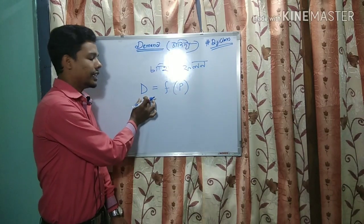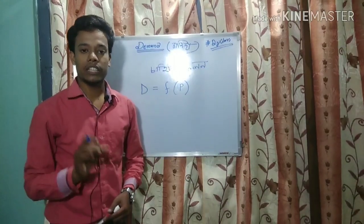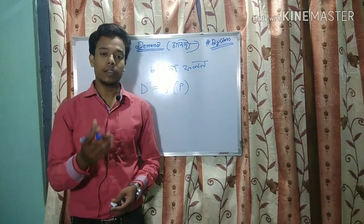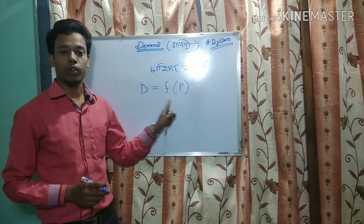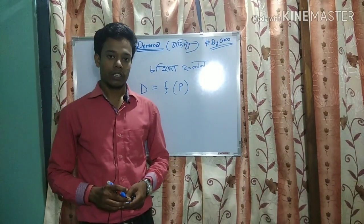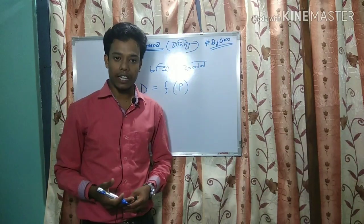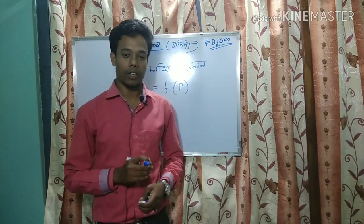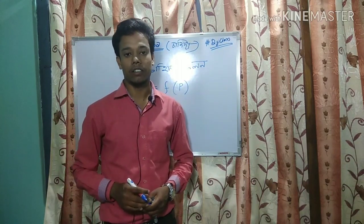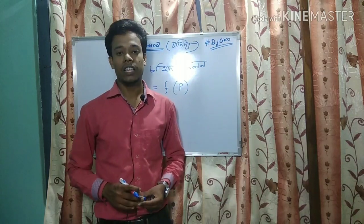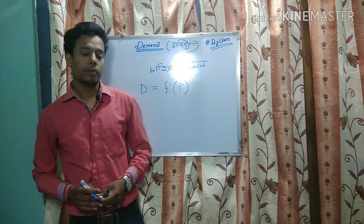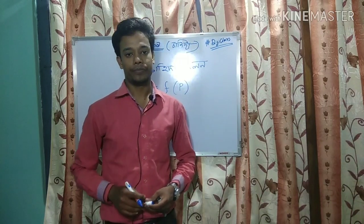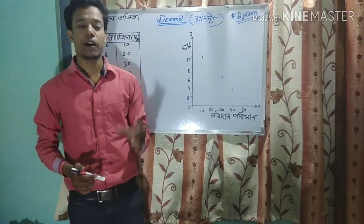আমি জানো যে কুনোটা বসিটোর যিটো সাহিদা হেরু দামার প্রতি নির্ভর করে। গতিকে এই বসিটোর সাহিদা আরো দামার মাজার যিটো খ� — দাম বাঢ়িলে বসিটোর সাহিদা কমি গোই থাকে, যদি দাম কুমি খোয় আকো যদে বসিটোর দাম কুমি গোই থাকে।